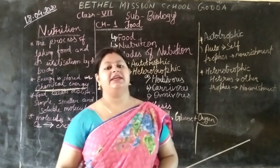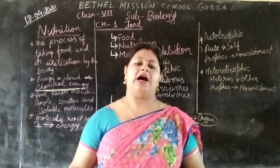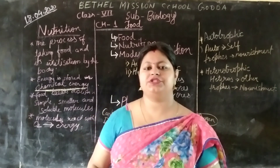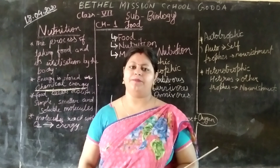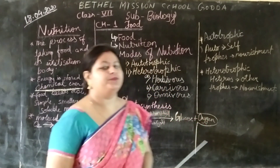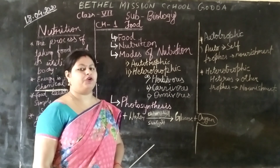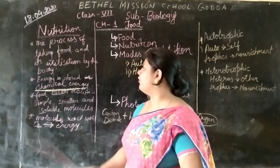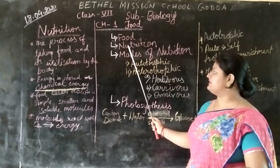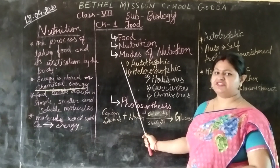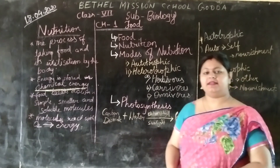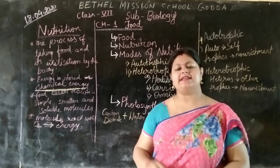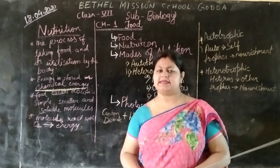Growing plants, how the plants give us food, how these foods are utilized by our body, how food gives us energy — these things you already have discussed in your previous classes. Today we are going to discuss what is food, how food is energy for our body, what is nutrition, what are the modes of nutrition, how plants prepare their food, the process of photosynthesis, and the equation of photosynthesis.